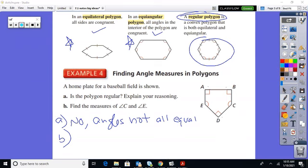So we would say, the sum of the angles would be five minus two times 180. So three 180s is 540.